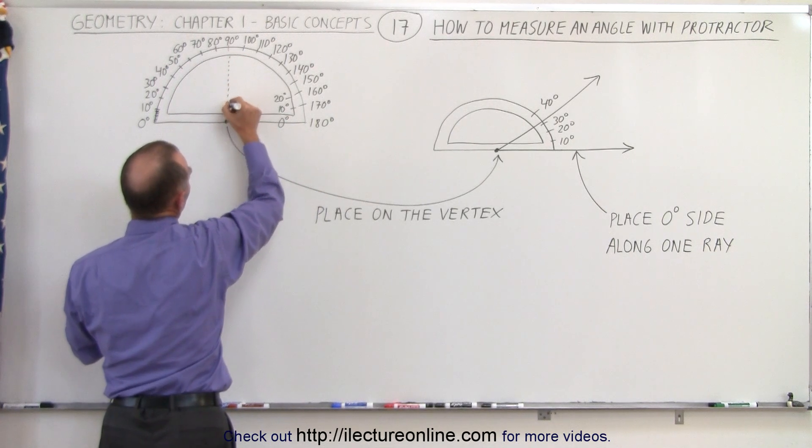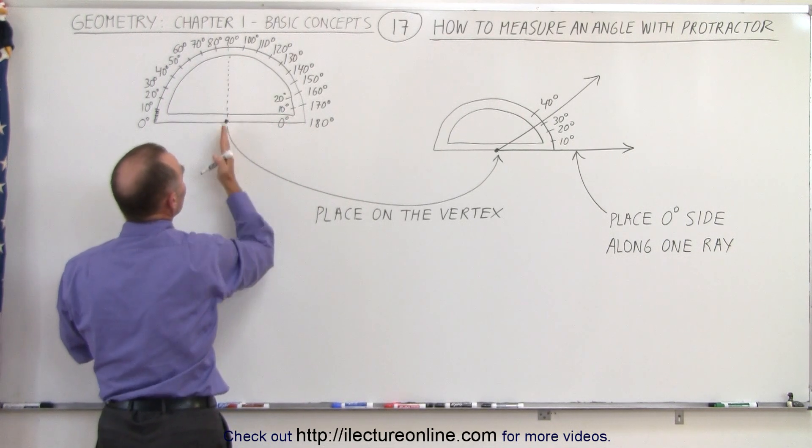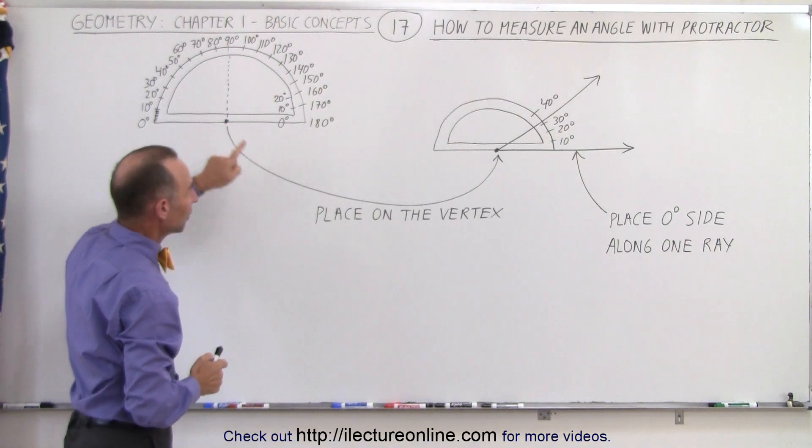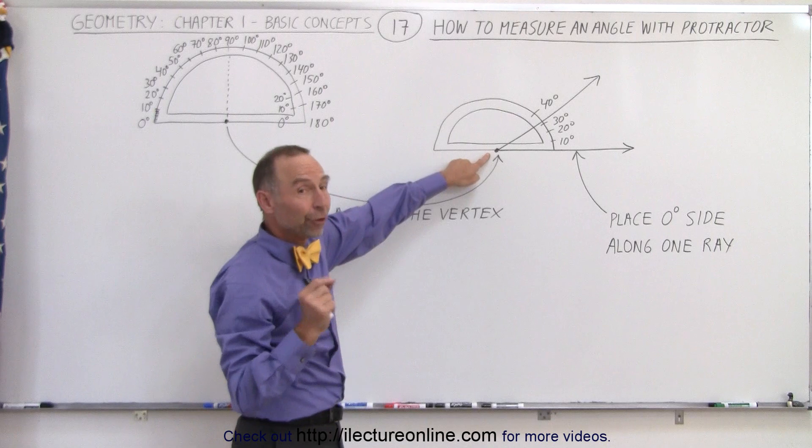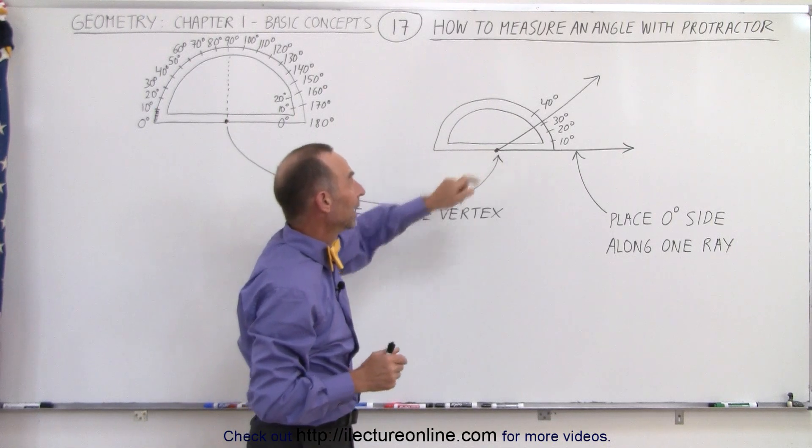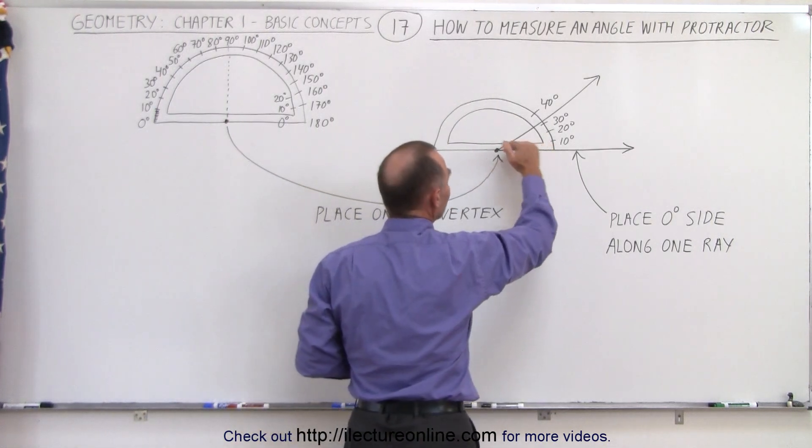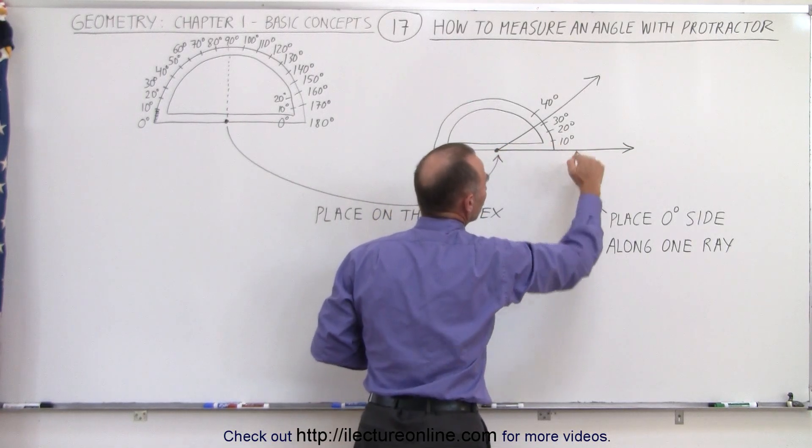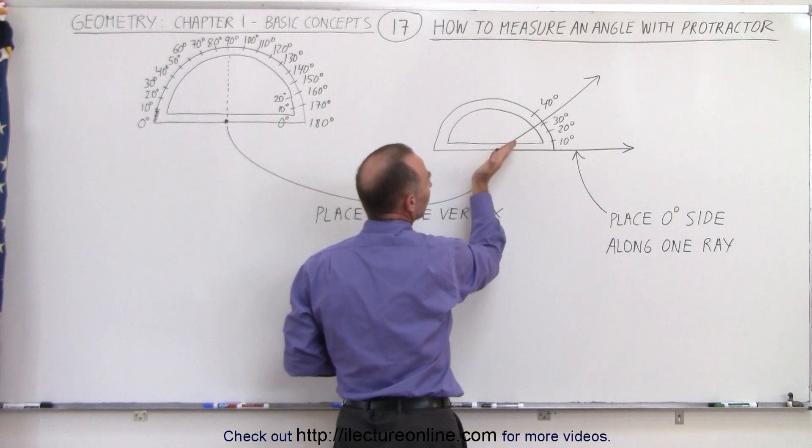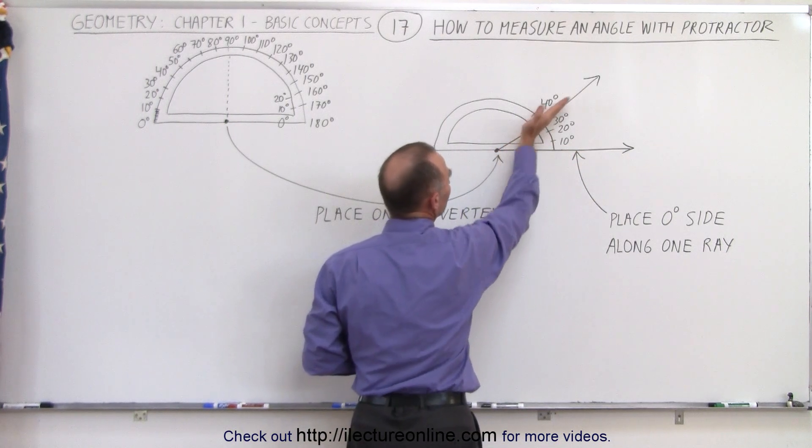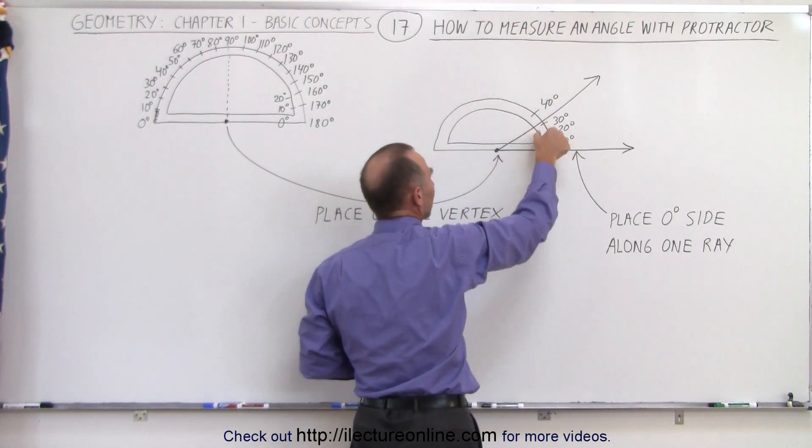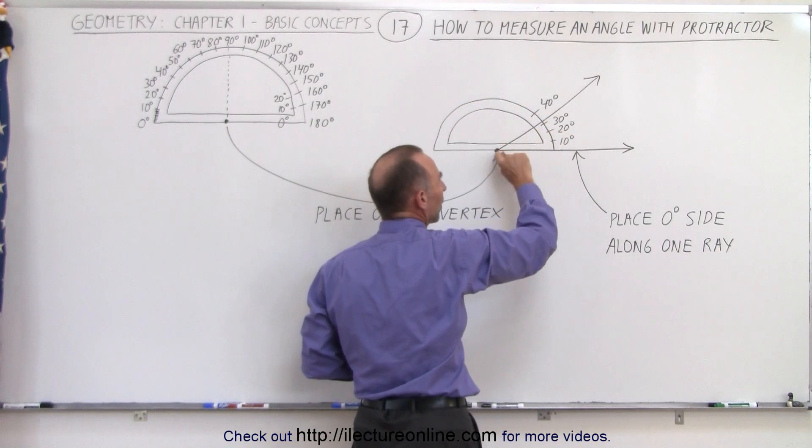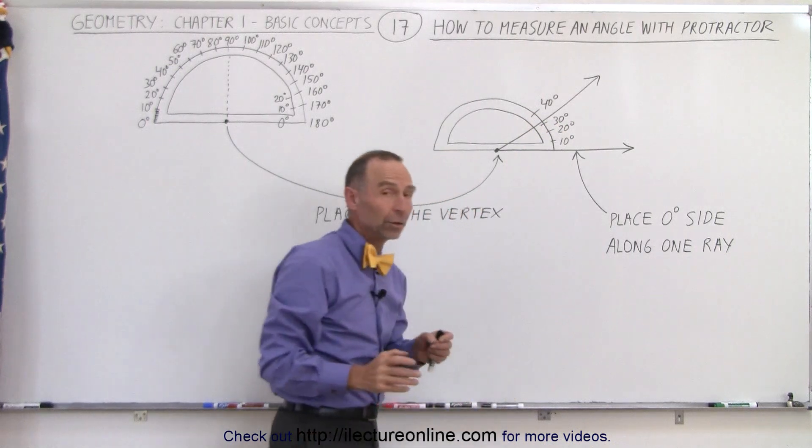And over here if you draw a straight line down, it hits right perpendicular to the 90 degrees at the top. So that point right here is typically placed on the vertex of the angle, and then you place the side, the long side, or the flat side of the protractor along one of the two rays, and then you can see that the other ray then will go cut through that semicircle portion of the protractor, and you can see then where it cuts through, you can actually read the angle.